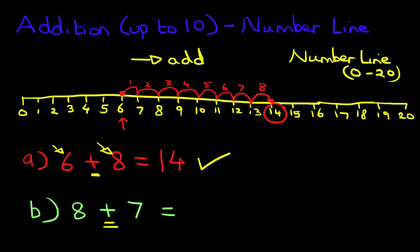What's the first number? Let's just change colors. We've got 8. Find 8 on the number line. Here it is. Let's put a nice big dot. How many jumps are we going to take? We are going to take 7 jumps. Right, now watch carefully.